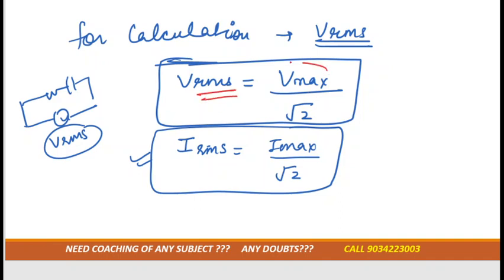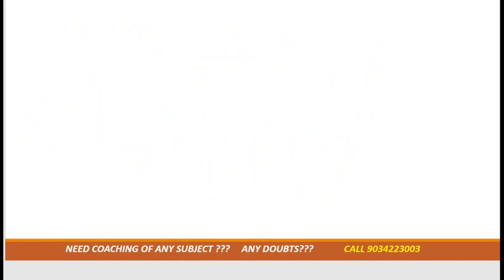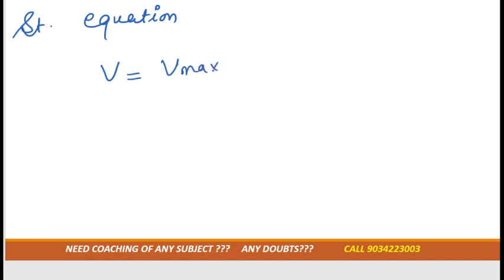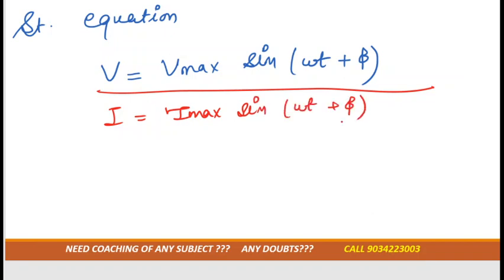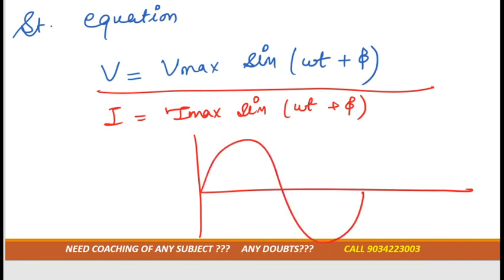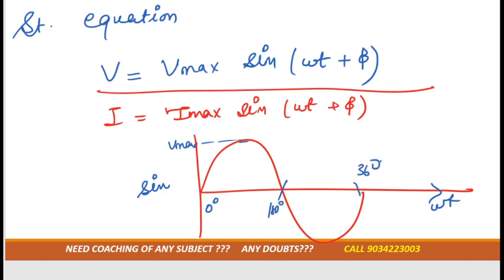Maximum value is always given in the form of an equation. The standard equation is: V = V_max · sin(ωt + φ). Similarly for current: I = I_max · sin(ωt + φ). If this is the waveform for voltage, V_max is the maximum, and since it is a sinusoidal waveform it is represented by the sine term with ωt — going from 0° to 180° to 360°.